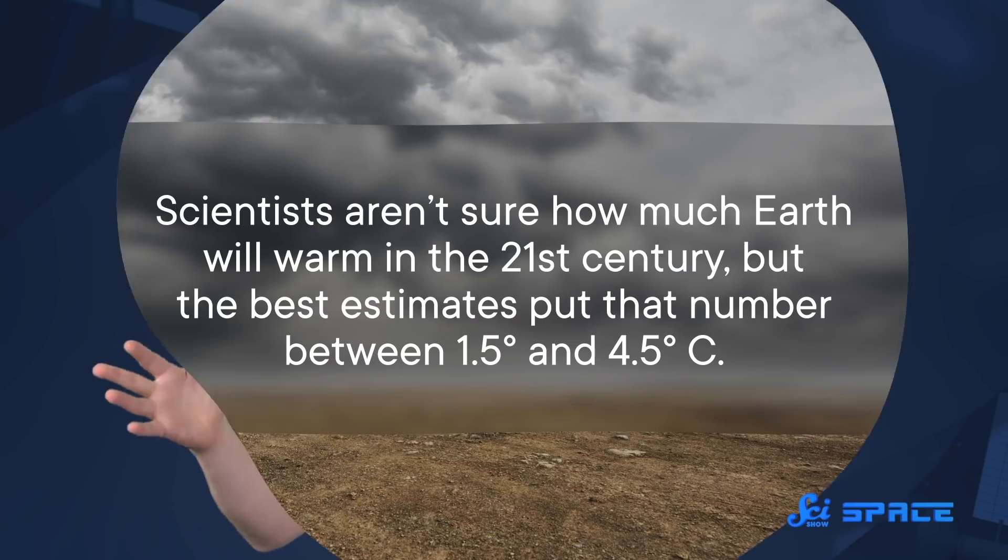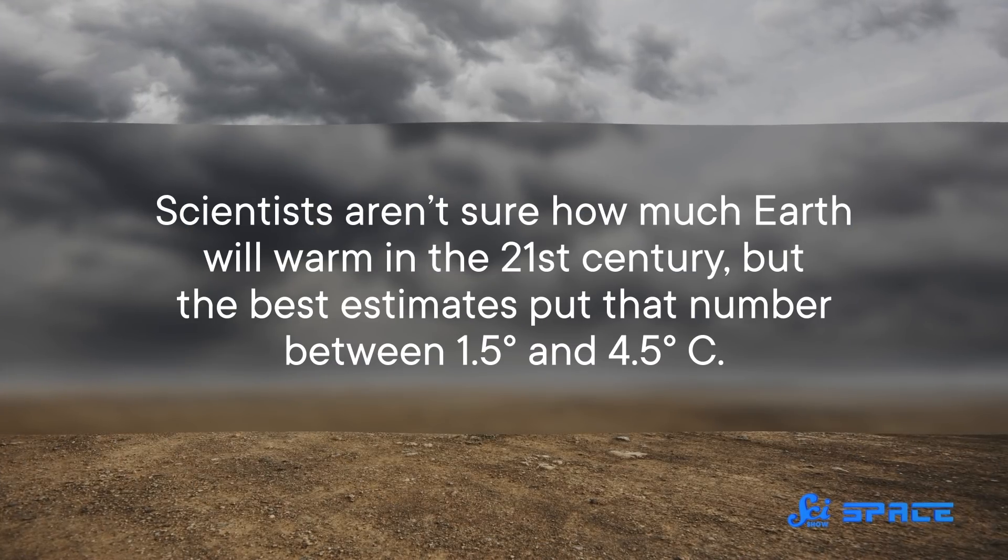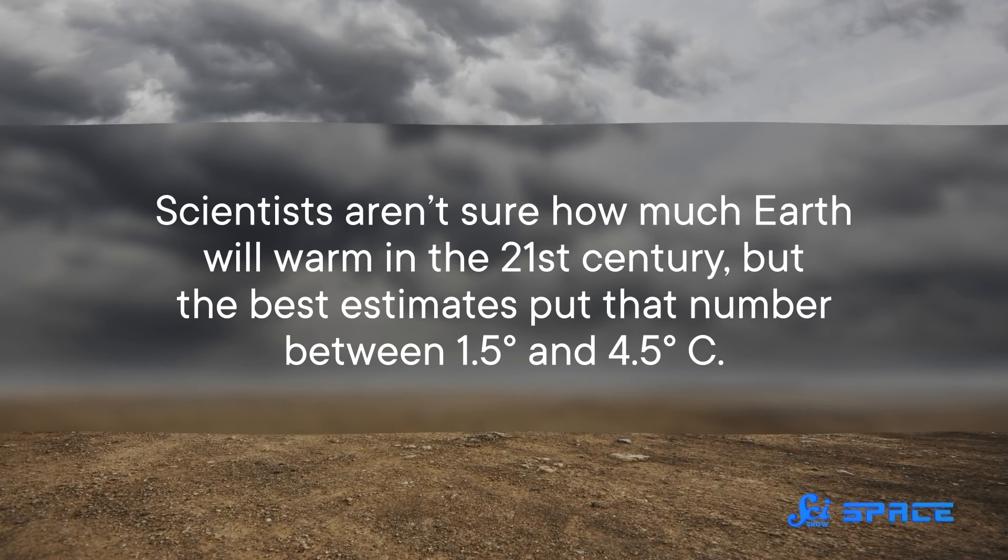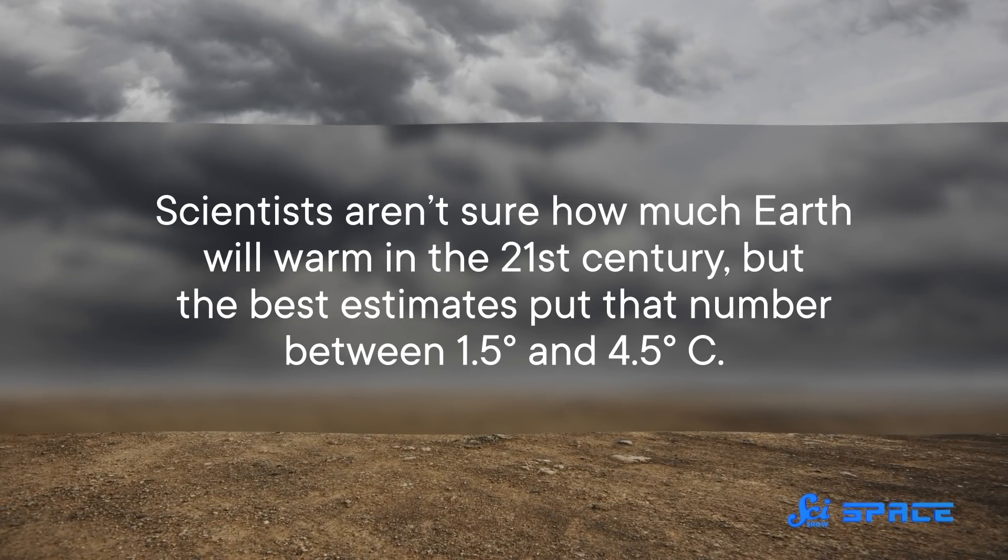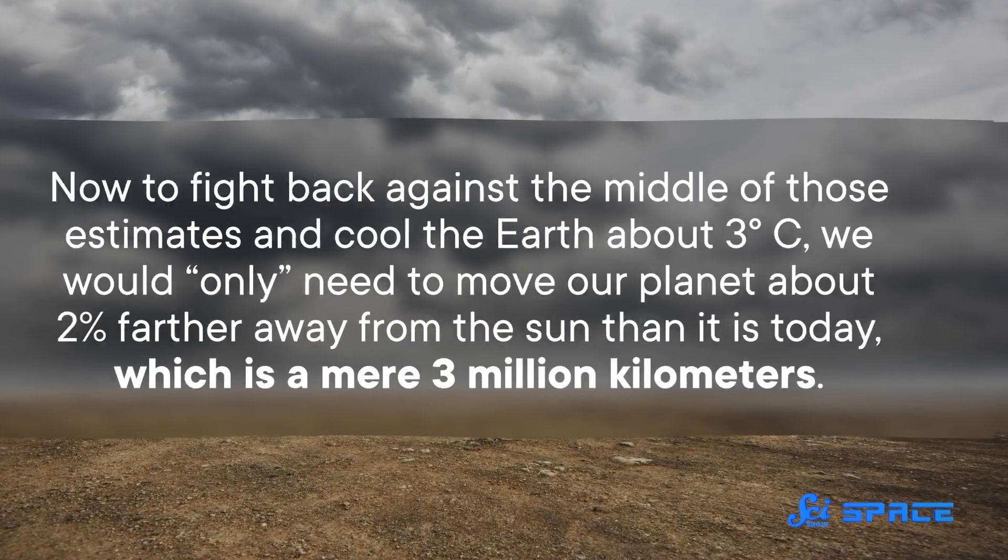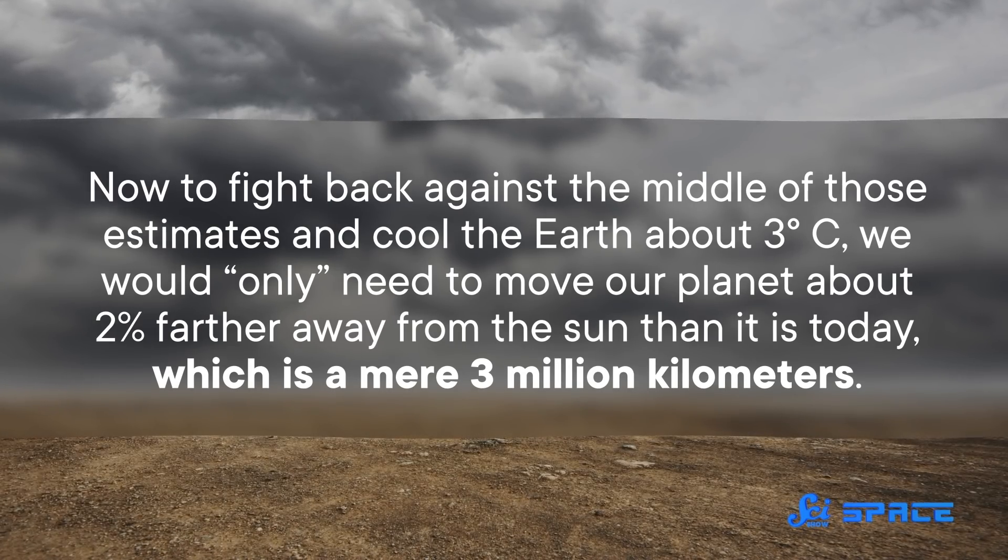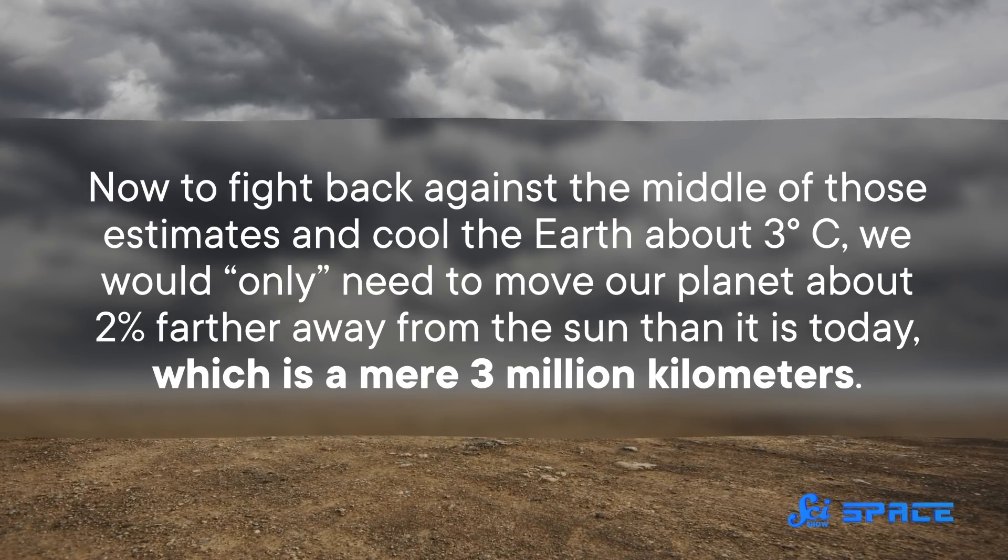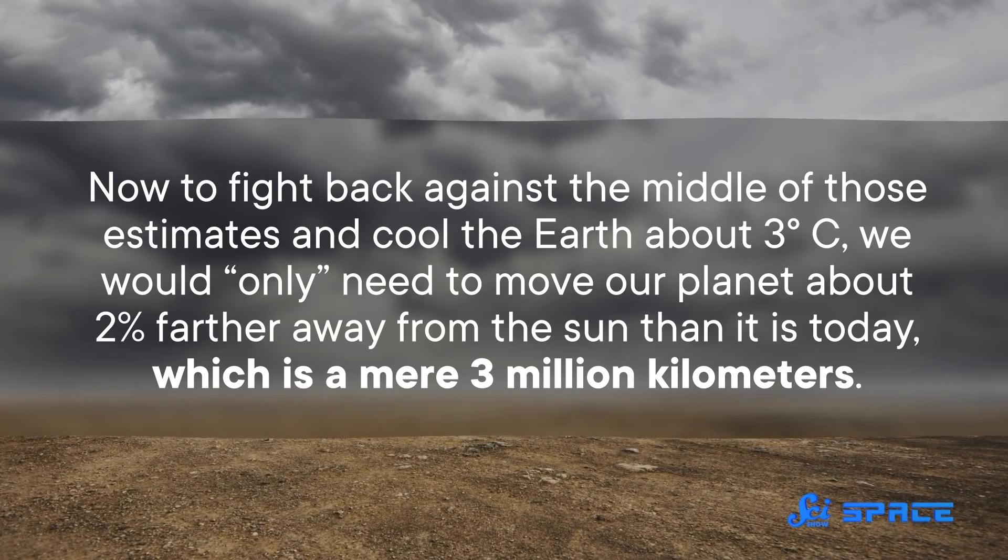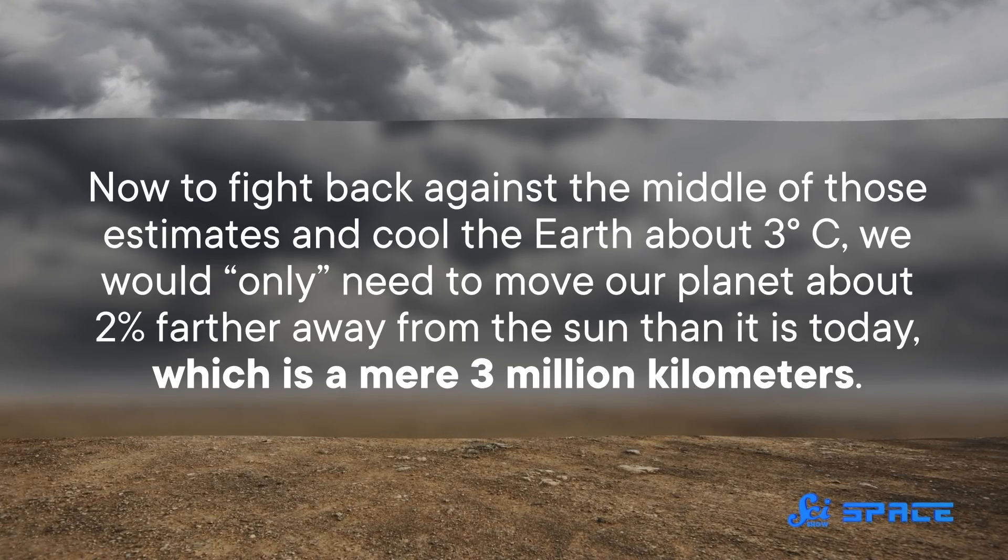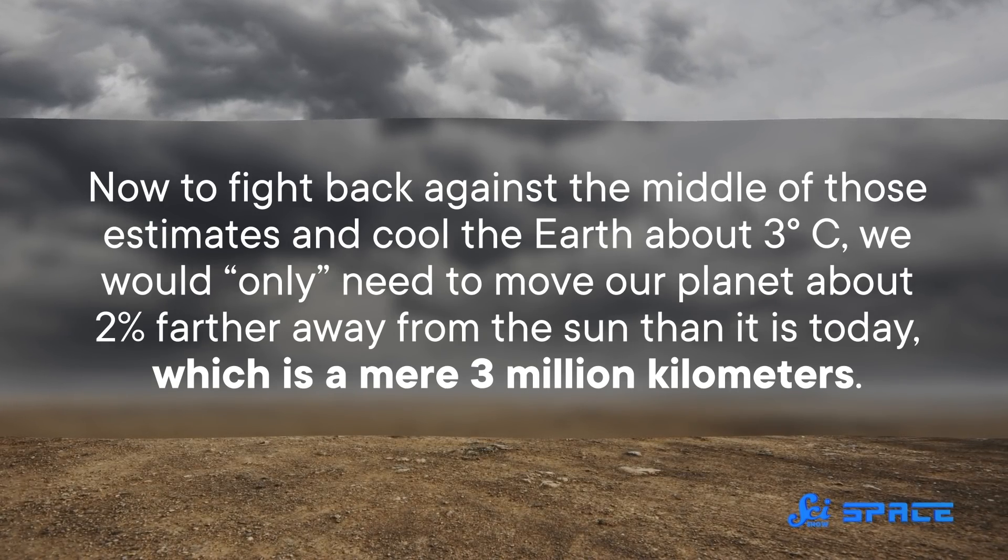So it seems like it could theoretically work. As you get further from the sun, the intensity of sunlight drops off rapidly. As a function of the distance squared, in fact. So a relatively small change could have a meaningfully large effect. Now, scientists aren't sure how much Earth will warm in the 21st century, but the best estimates put that number between 1.5 and 4.5 degrees Celsius. Now, to fight back against the middle of those estimates and cool the Earth about 3 degrees Celsius, we would only need to move our planet about 2% farther away from the sun than it is today, which is a mere 3 million kilometers.